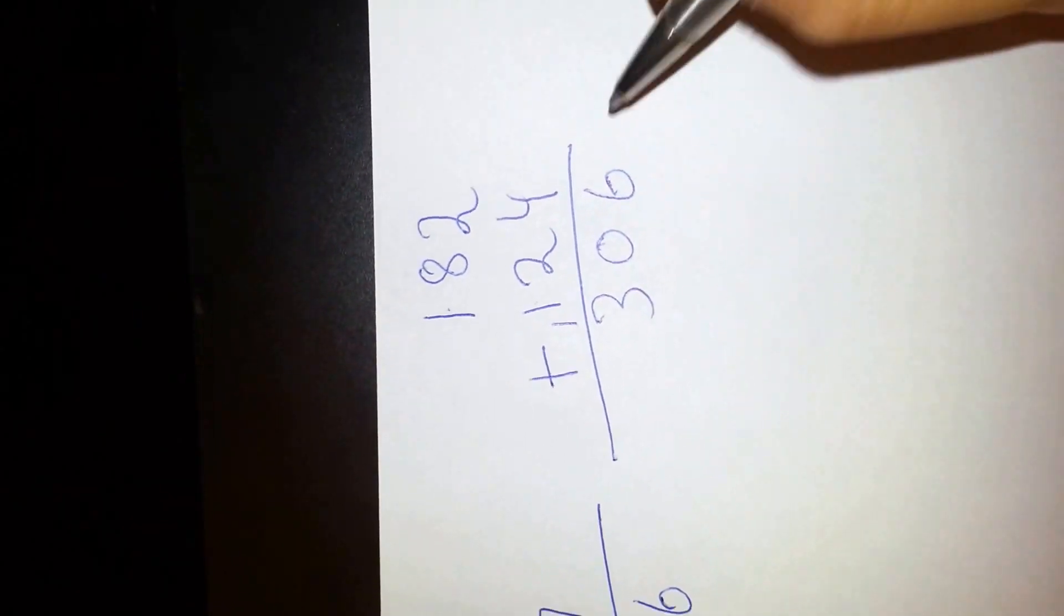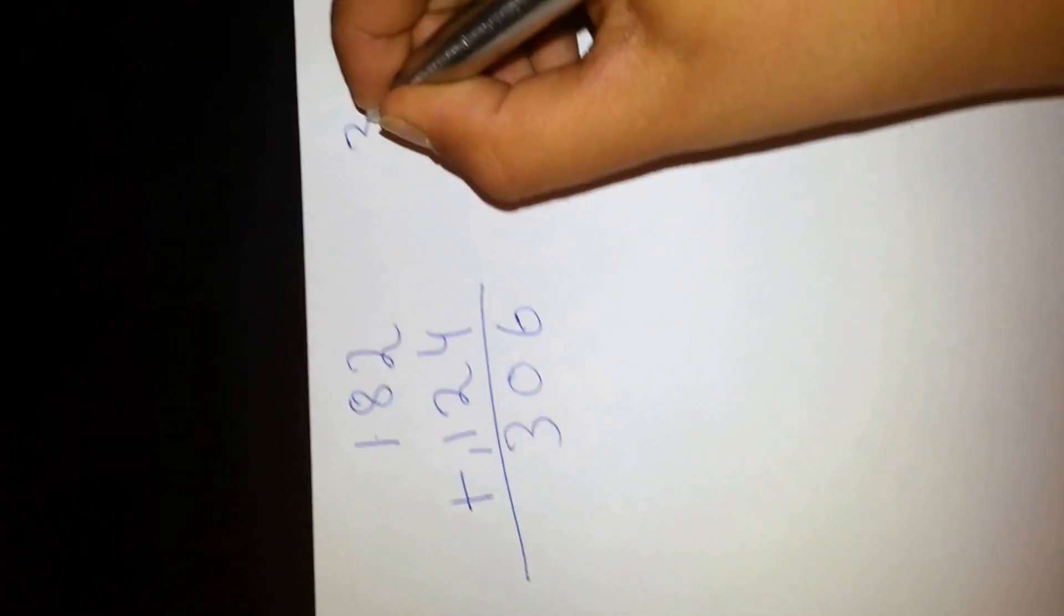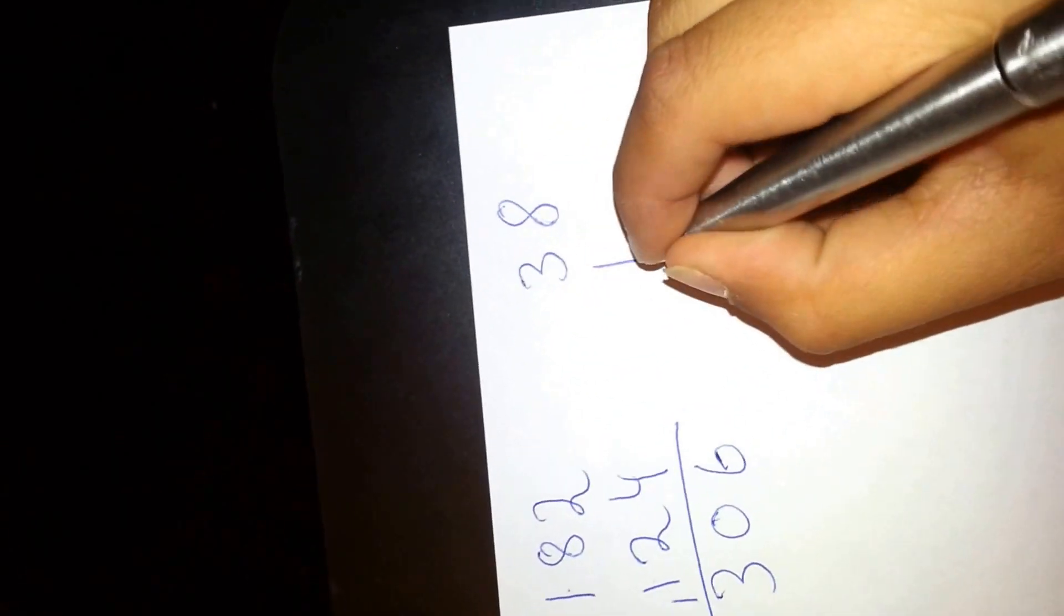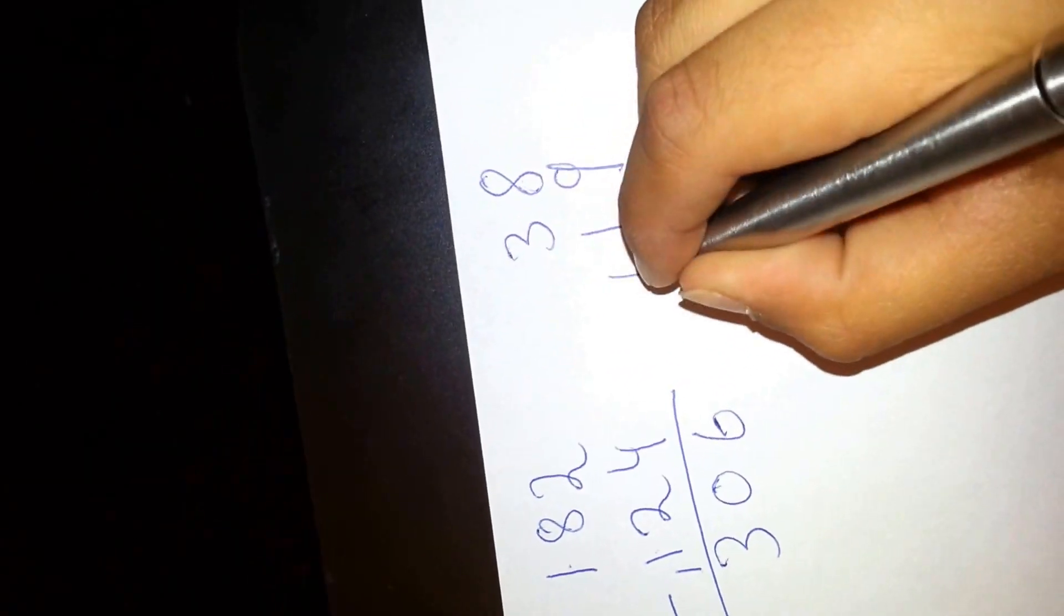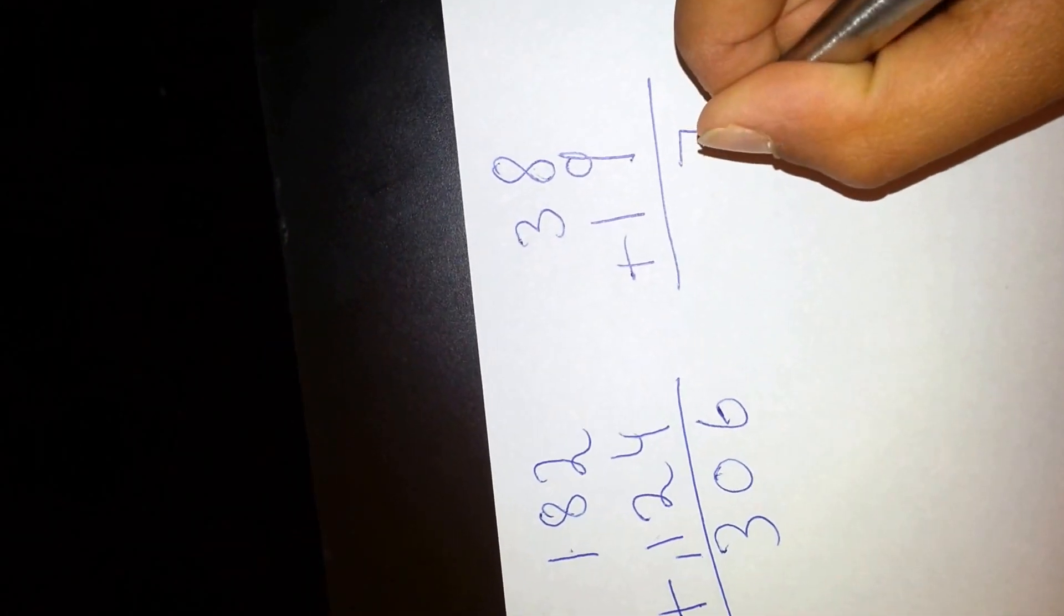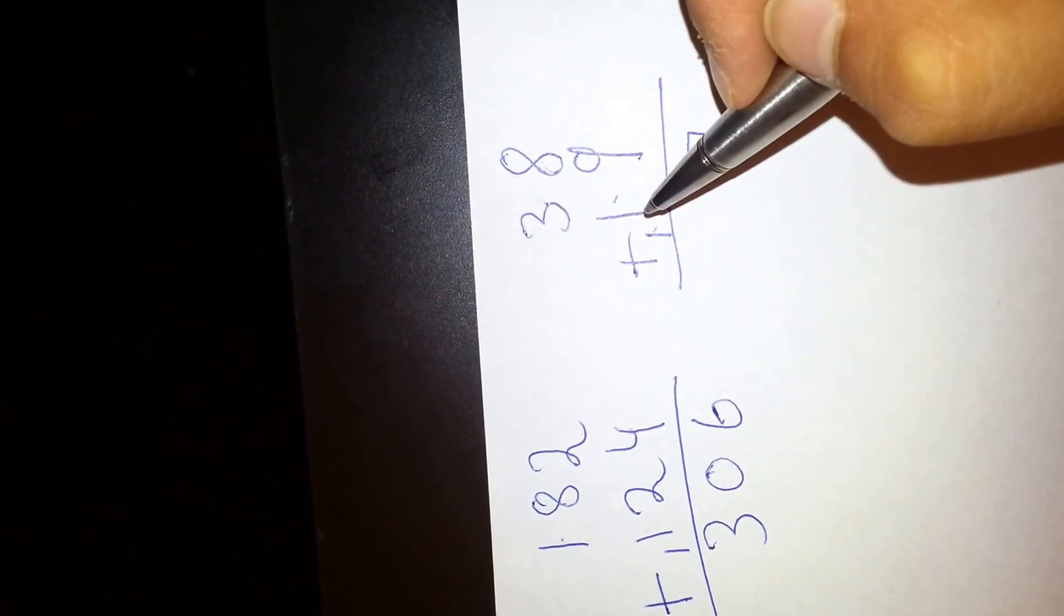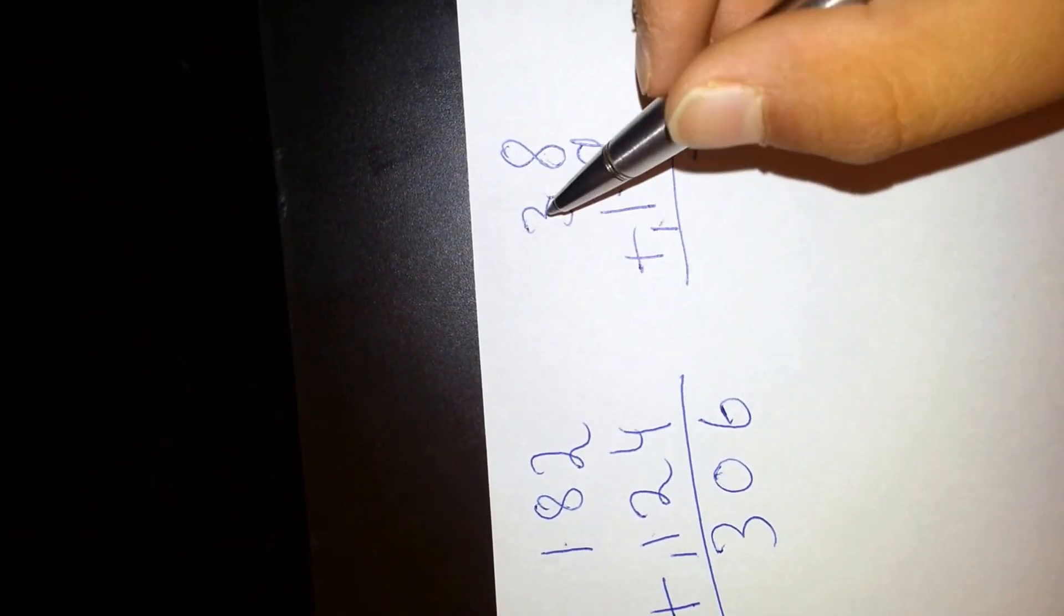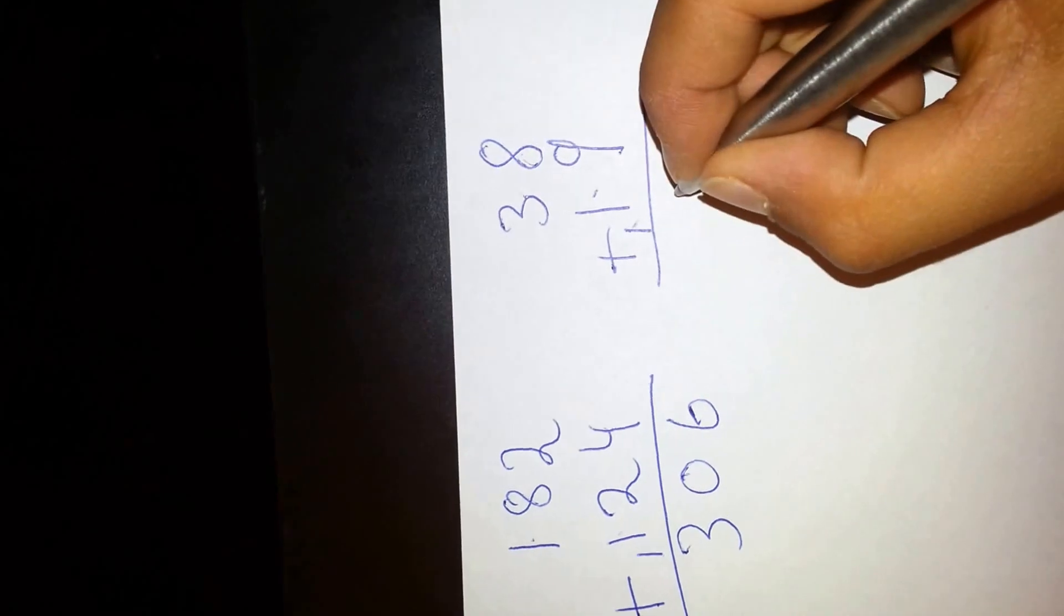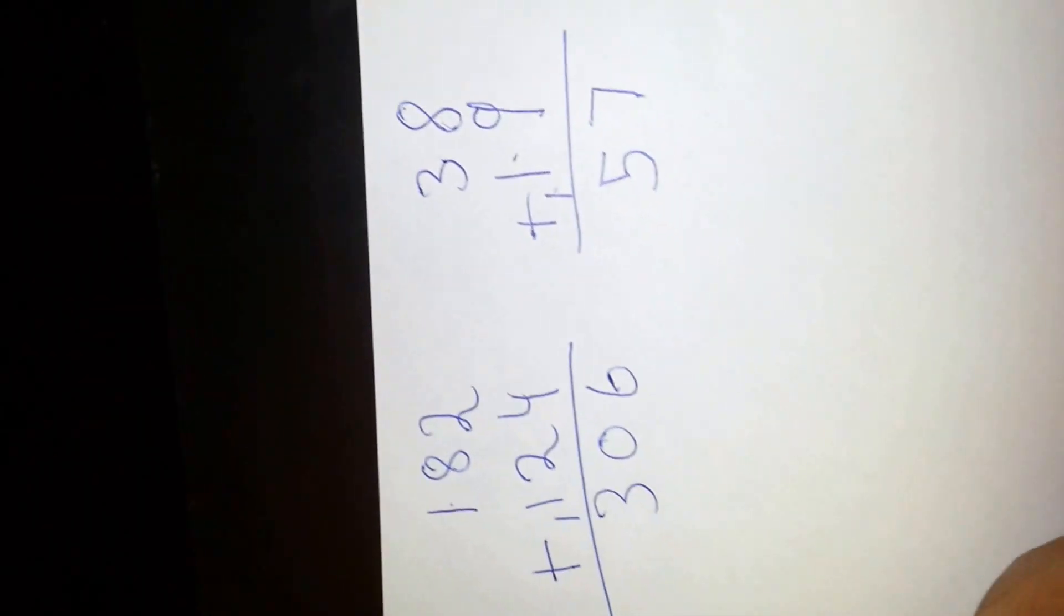Now try this one: 38 plus 19. What's 8 and 9? It's 17. Put down the 7, carry over the 1. 3 plus 1 plus 1, well 1 and 1 is 2, and what's 3 plus 2? 5. So the answer is 57.